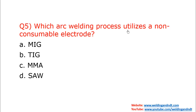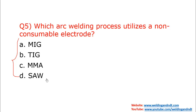Question number five: which argon gas welding process utilizes a non-consumable electrode? All four processes — MIG (gas metal arc welding), TIG (gas tungsten arc welding), MMA (shielded metal arc welding), and SA (submerged arc welding) — use argon gas. The answer is TIG. In TIG welding, a non-consumable electrode made up of tungsten is used.